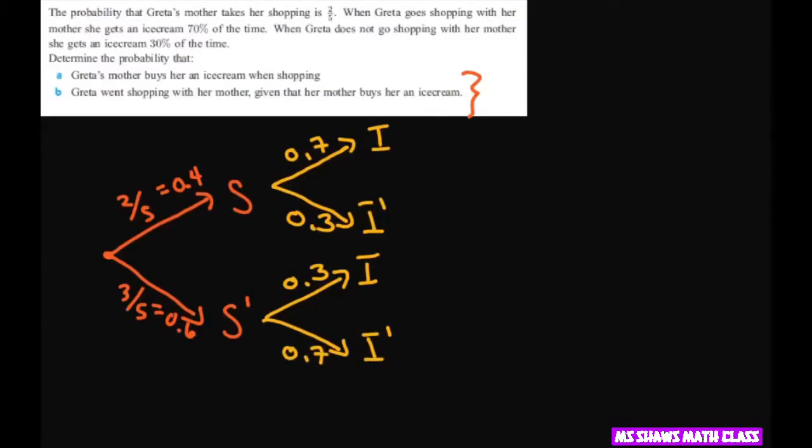There's our tree diagram. We want to calculate the probability that Greta's mother buys her ice cream when shopping. So we're looking at when shopping leads to ice cream, that's this one and this one.